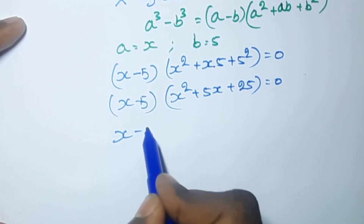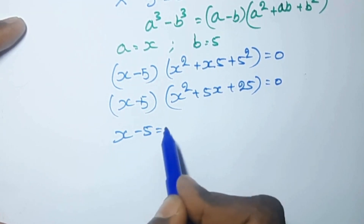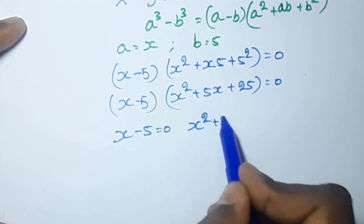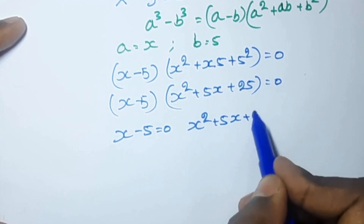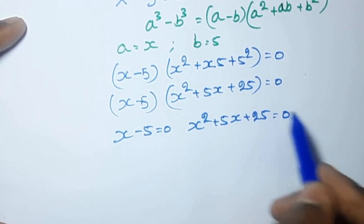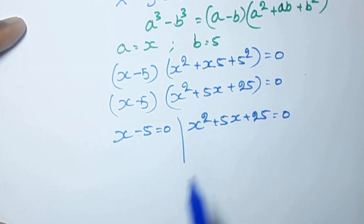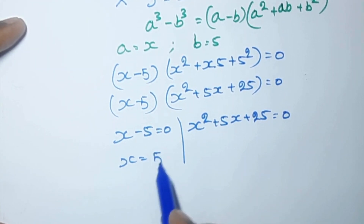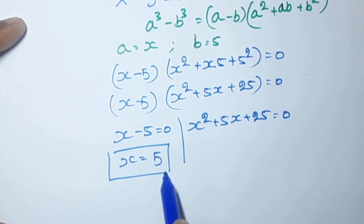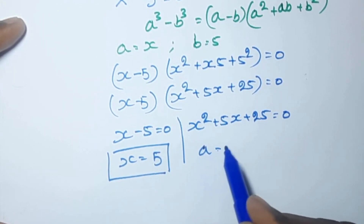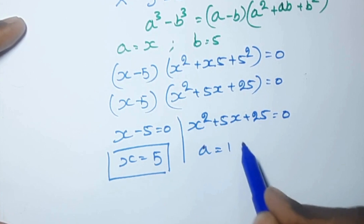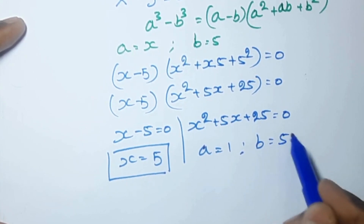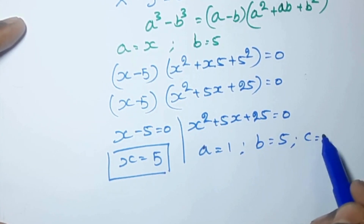This gives us x square plus 5x plus 25 equal to 0. So x minus 5 equal to 0, and the other factor is x square plus 5x plus 25 equal to 0. From the first factor, x equal to 5. For the quadratic, a equal to 1, b equal to 5, c equal to 25.